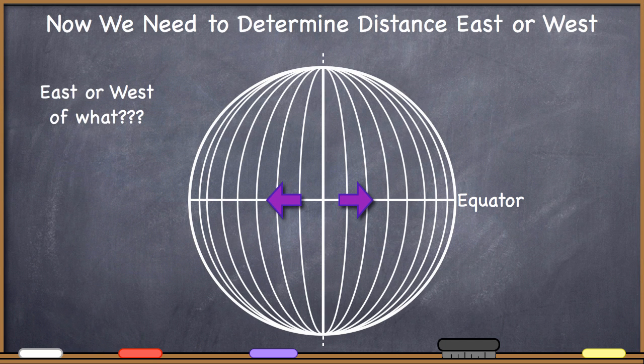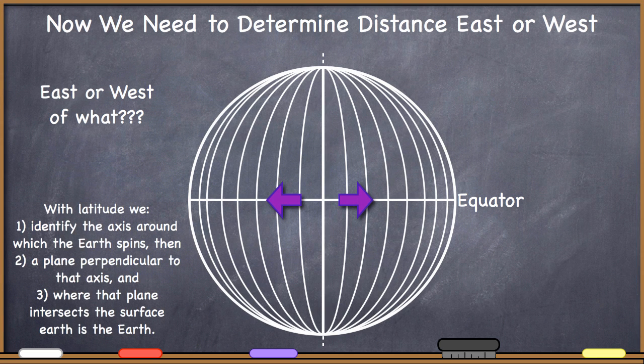This immediately brings up a very important point: east or west of what, exactly? With latitude, because of the tilt of the Earth's axis and spinning around that axis, and establishing a plane perpendicular to that axis and its intersection with the Earth, we were able to define the equator and measuring north and south of that.